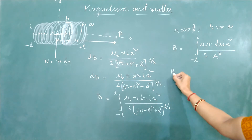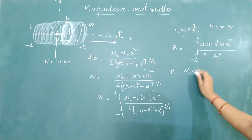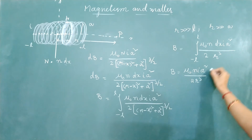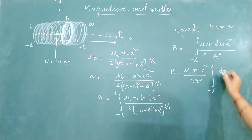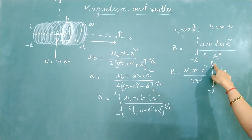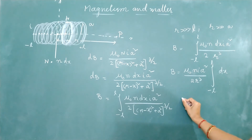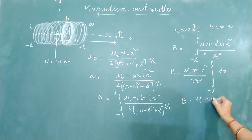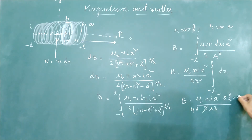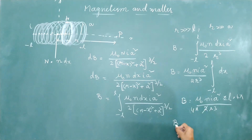Evaluating the integral: ∫dx from −L to +L gives 2L. So the magnetic field becomes B = (μ₀ · n · I · a² · 2L) / (2r³). Multiplying and dividing by 4π to express it in terms of μ₀/4π, we get B = (μ₀/4π) · (n · I · a² · π · 2L · 2) / r³. Here, n · 2L gives the total number of turns N, and π·a² is the area A.